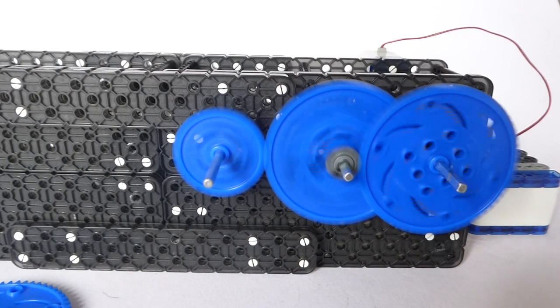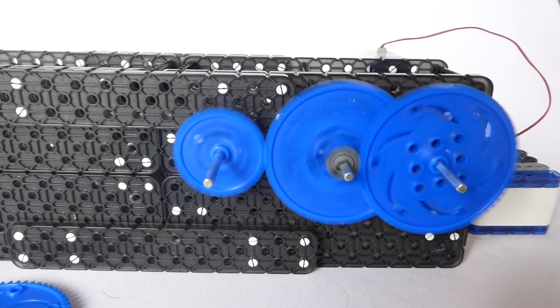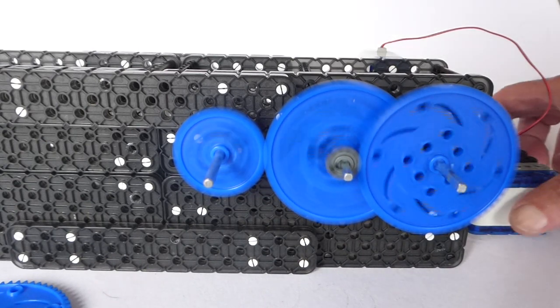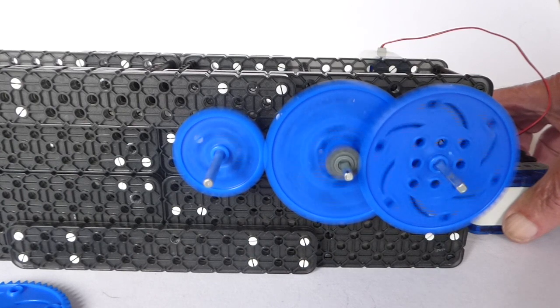If we change the gears around so that the large wheel is the driver then we get the reverse of the calculation. You can see how fast the final driven wheel is going.